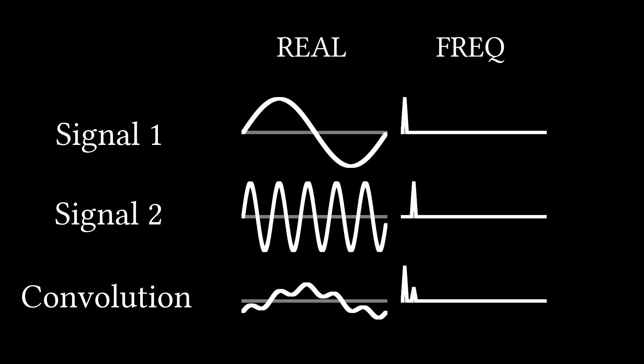But in frequency space, this is just two peaks corresponding to individual frequencies, exactly what we would get by multiplying the two frequency space images.